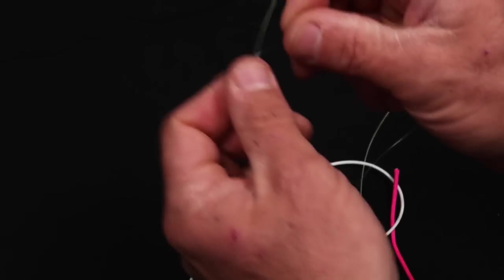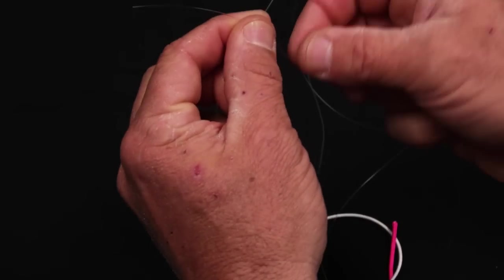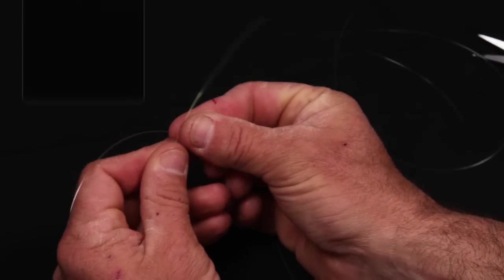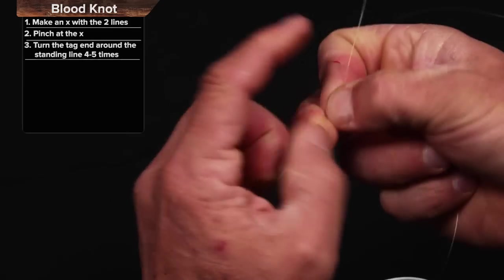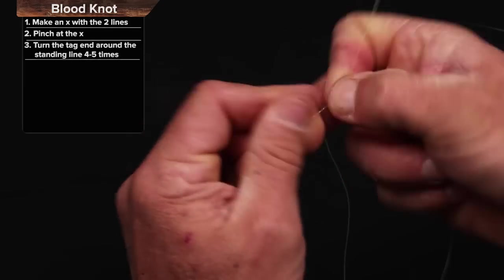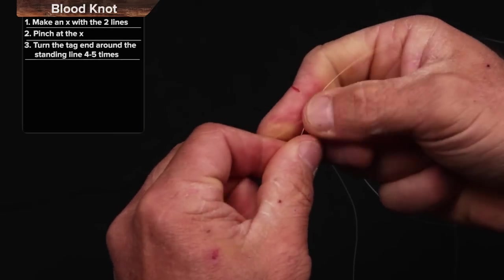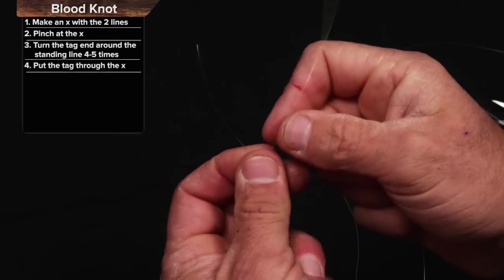I can show you those with monofilament or fluorocarbon. This is fluorocarbon to monofilament. So I'm going to make an X with the lines. I'm going to wrap the clear one, two, three, four, five times. Put it right through here.